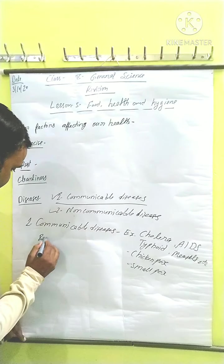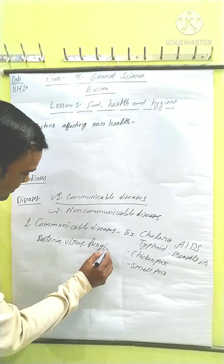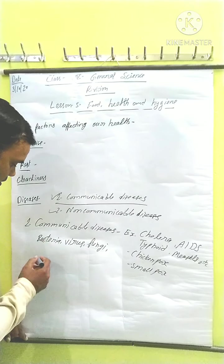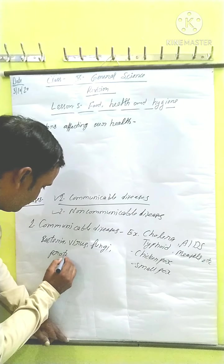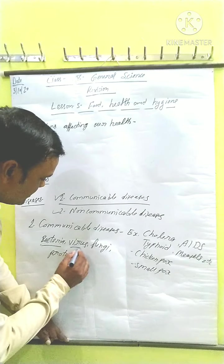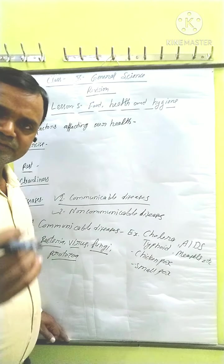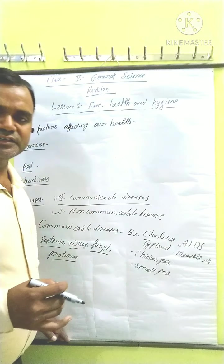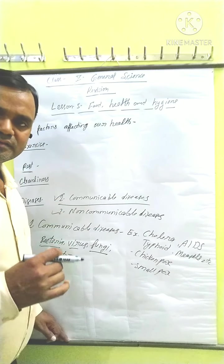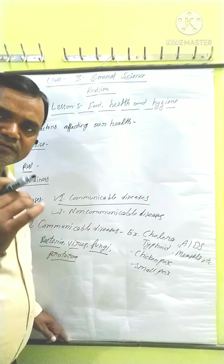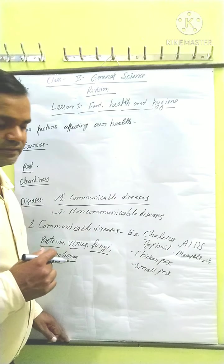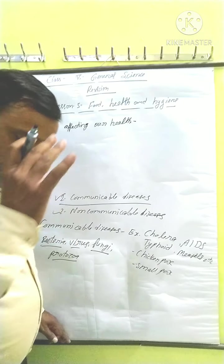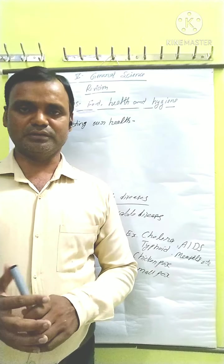You know that communicable diseases are caused by bacteria, viruses, fungi, and protozoa. The microorganisms that cause disease are called germs, and germs cause communicable diseases.